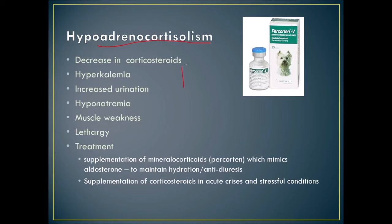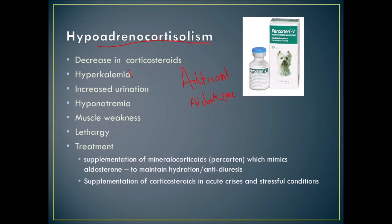Signs of Addison's include decreased corticosteroids, hyperkalemia, increased urination, hyponatremia — low sodium — muscle weakness, and lethargy. Treatment requires supplementing mineralocorticoids. Percorten mimics aldosterone to maintain hydration as an anti-diuretic. Corticosteroids such as prednisone can also be supplemented in acute crises and stressful conditions.